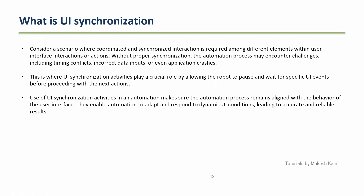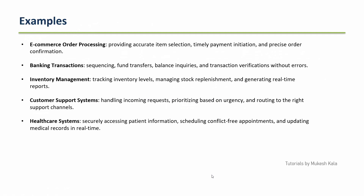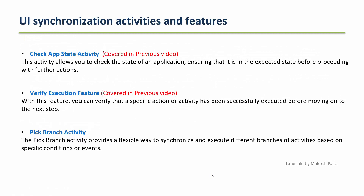We already discussed this in detail in a previous video. For example, if you are managing an inventory and before placing an order you should make sure the relevant item is available in stock. For a banking transaction, you want to debit something so you need to make sure the specified amount is available in your bank. UiPath provides three activities for UiSynchronization: Check App State, Verify Execution, and the Pick Branch activity.